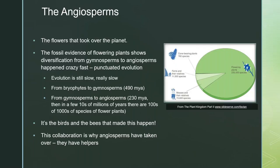Angiosperms took over the planet. They appear relatively late in the fossil record, but once they started happening they just exploded in terms of speciation — thought to be largely because of interactions between microbes and pollinators that allowed this massive bloom. Evolution is still very slow, but tens of millions of years is very fast for a huge number of new species to arise. It's the birds and the bees that help make this happen — an excellent story about how collaboration is far more powerful in evolutionary biology than the idea of nature 'red in tooth and claw.'